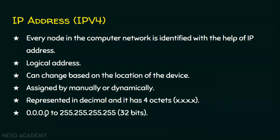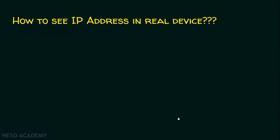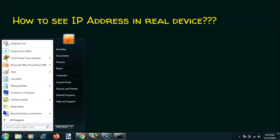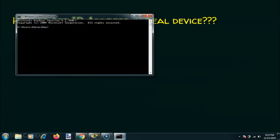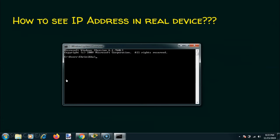The total number of bits in every IPv4 address is 32 bits. We will now see how to view an IP address on a real device. To view the IP address, click the Start menu, type cmd and press Enter. When you give cmd and press Enter, you will be presented with the command prompt. This is the command prompt of the Windows operating system.